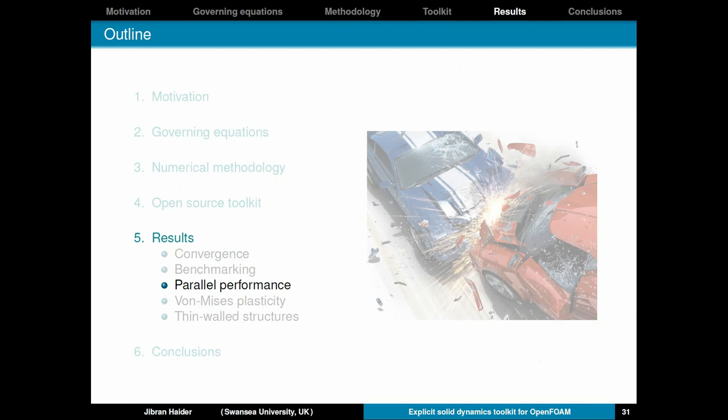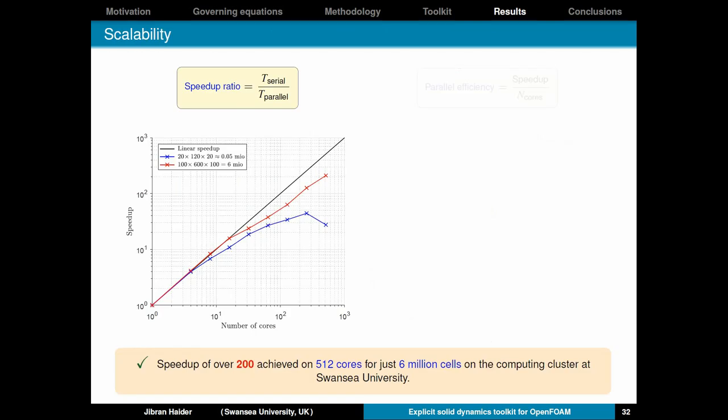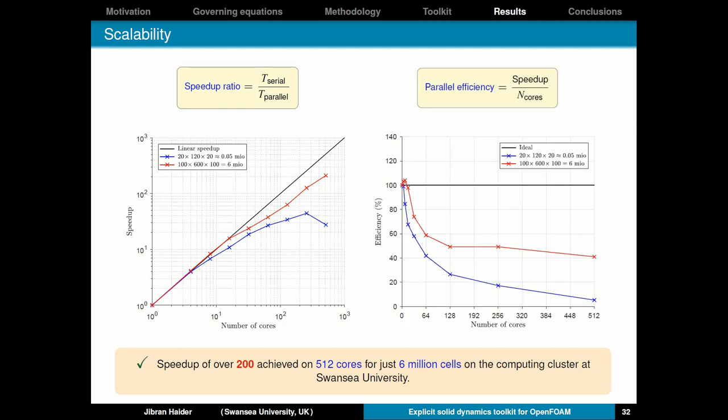Moving on to the parallel performance of the scheme. So here you see scalability tests. So the speed-up shows very good results. Over here you can see that the speed-up of over 200 is achieved on just 512 cores. Where just 6 million cells are utilized. So of course you can go to higher speed-ups if you employ finer meshes. And then the parallel efficiency of the scheme is shown here. Which also looks very good.